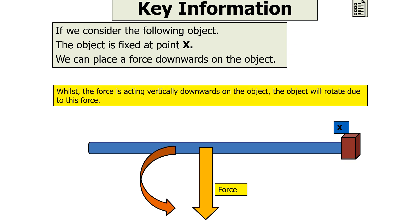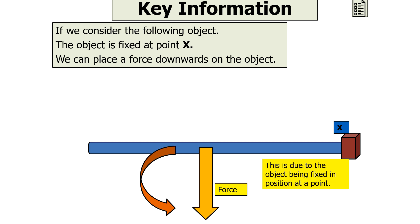Whilst the force is acting vertically downwards on the object, the object will actually rotate due to this force. This is due to the object being fixed in position at a point, so this causes the force to have a rotational effect on the object.